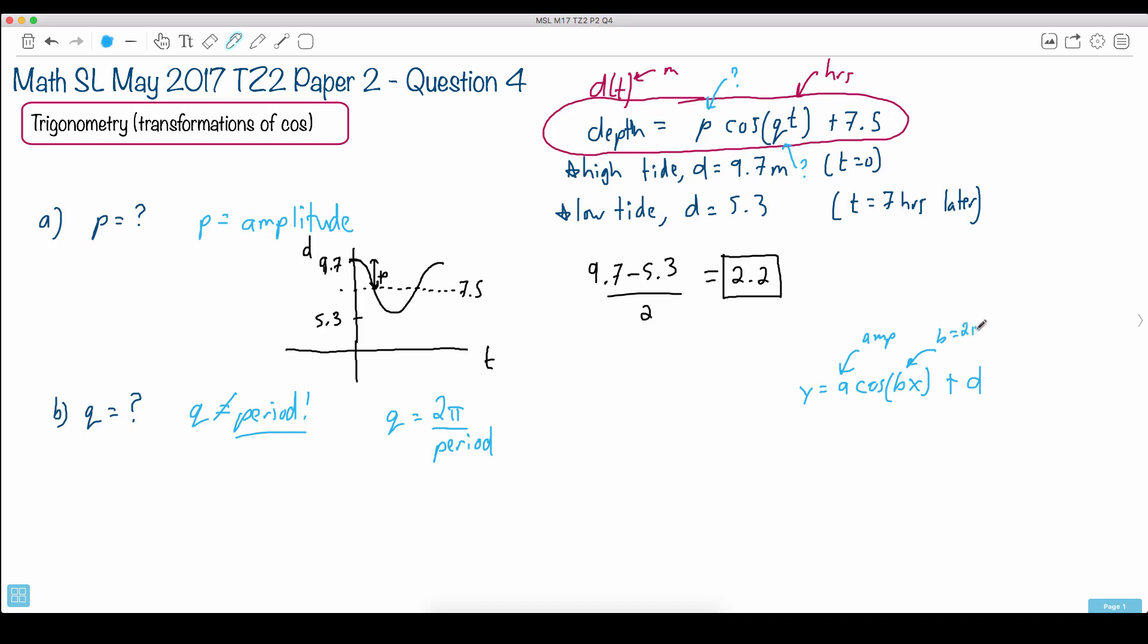B is not equal to the period, but it's 2π over the period. And D is the vertical shift. That's normally how it goes.